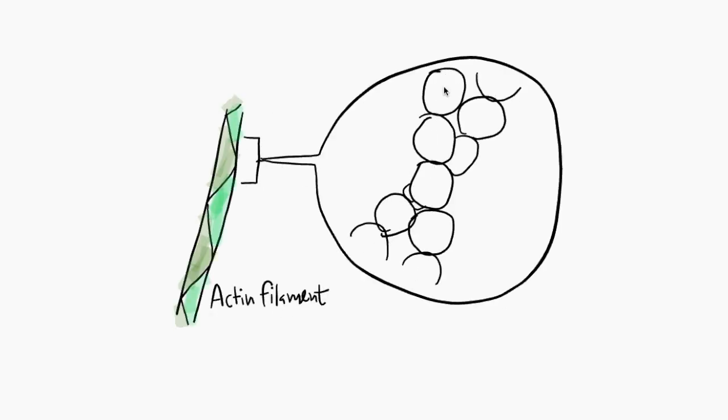You also have something called actin filaments. These are simply made with a protein called actin. They're even thinner than microtubules and form long fibers that are longer than microtubules. They usually occur in bundles and they also help with the movement of structures inside the cell.